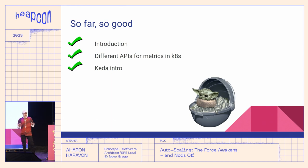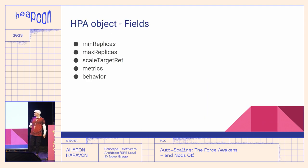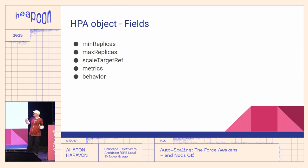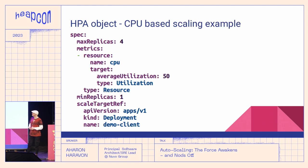Now let's learn about the HPA object, which is the configuration for the HPA controller. It has five fields: minimum and maximum replicas define the range within which our application will be scaled; scale target reference is a pointer indicating which application should be scaled; metrics is an array of metrics the scaling will be based upon; and behavior is a field containing fine-tuning for the scaling. In this example, the YAML defines CPU-based autoscaling, specifying 50% average CPU utilization across all containers in all pods.